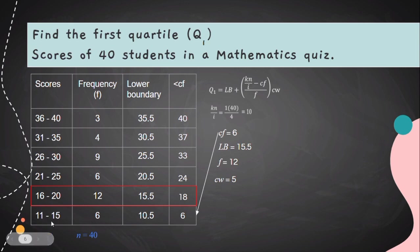To confirm the class width, we count the values from 11 to 15: 11, 12, 13, 14, 15 — so the class width is 5.